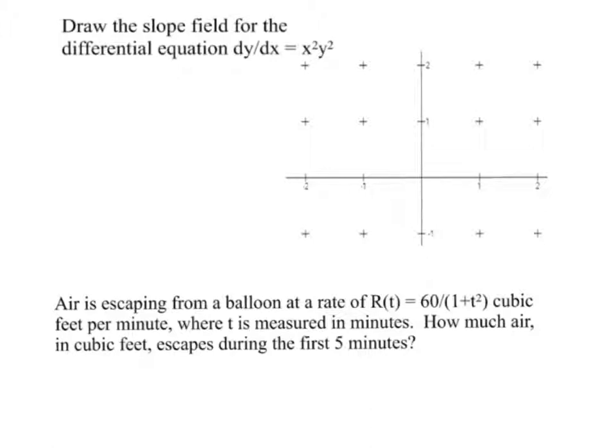So I want to point out that first of all, whenever x is 0, we'll have a slope of 0. So I'm going to put that in. Also whenever y is 0, we'll have a slope of 0. We'll put that in.